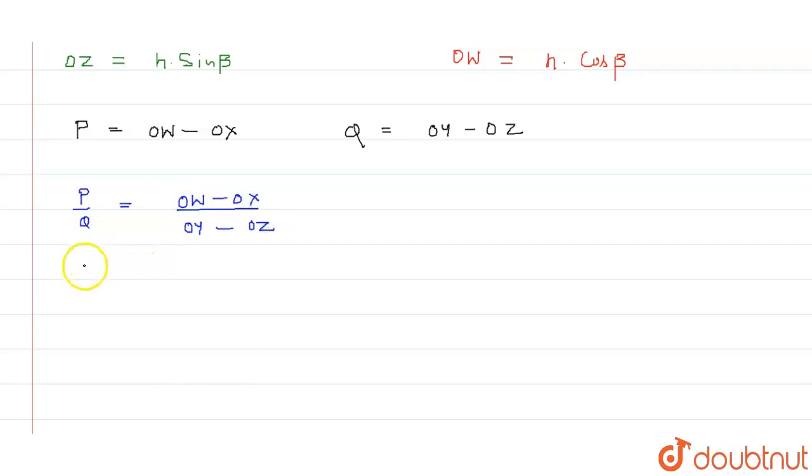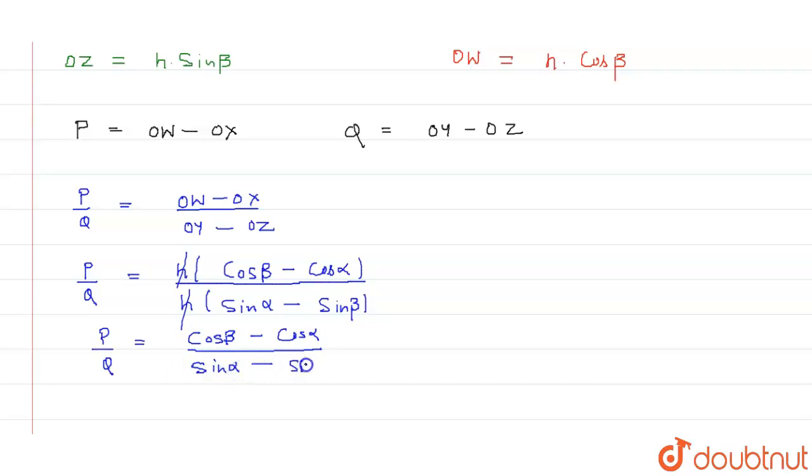Now we can put the value of all the terms. We get p by q is equal to h common cos beta minus cos alpha by h common sin alpha minus sin beta. That is what we need to prove.